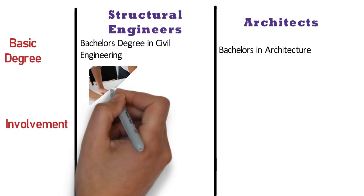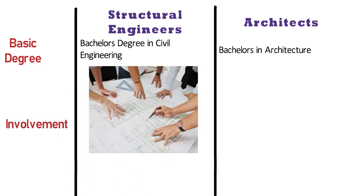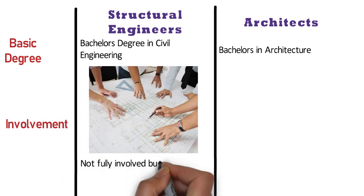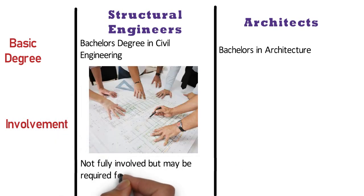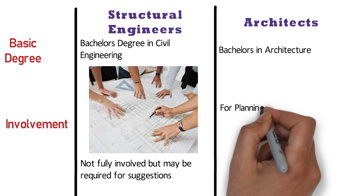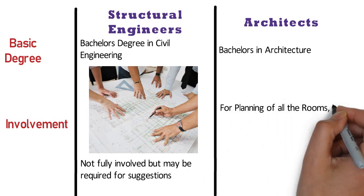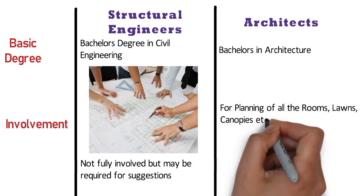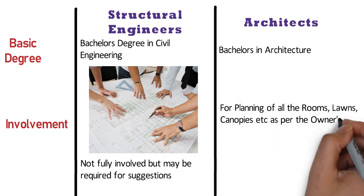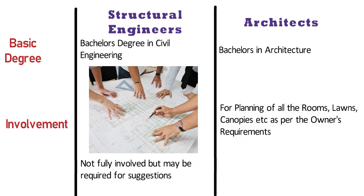Involvement: In the planning stage, the structural engineer is not fully involved but may be required for suggestions. On the other hand, the architect is responsible for planning of all the rooms, lawns, canopies etc. as per the owner's requirements.